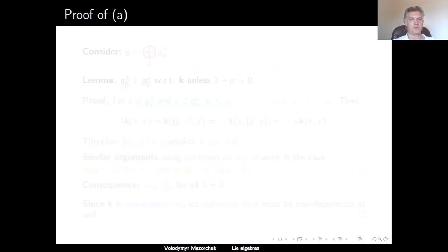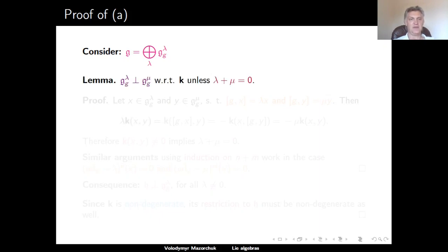Let's start by proving Part A. We consider the decomposition of the Lie Algebra G in generalized eigenspaces associated to our regular element G. So for each lambda in C, as in the previous lecture, we consider G sub G upper lambda — the set of all elements in G which are killed by a high enough power of ad G minus lambda. The claim is that G sub G upper lambda and G sub G upper mu are orthogonal with respect to the killing form on G unless lambda plus mu is equal to zero.